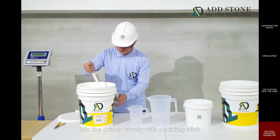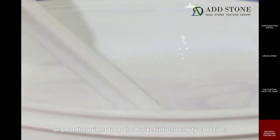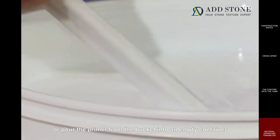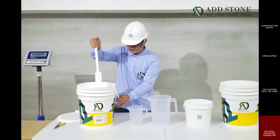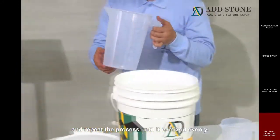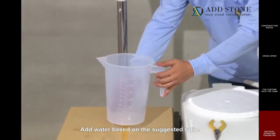Mix the primer evenly with a mixing stick, or pour the primer from the bucket into an empty container and repeat the process until it is mixed evenly. Add water based on the suggested ratio.